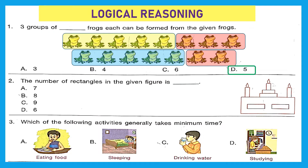Question 2: The number of rectangles in the given figure. Counting: 1, 2, 3, 4, 5, 6, 7, and 8 — in total eight rectangles. Option B is the right answer. Question 3: Which of the following activities generally takes the minimum time? Eating food takes some time, sleeping takes long time, drinking water is the quick one, studying also takes time. So drinking water, option C, takes minimum time.